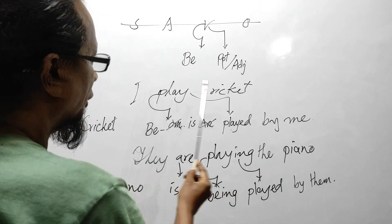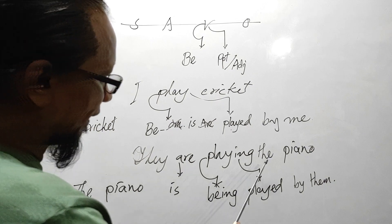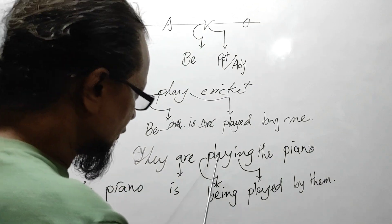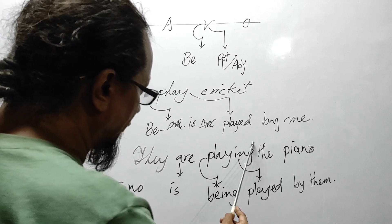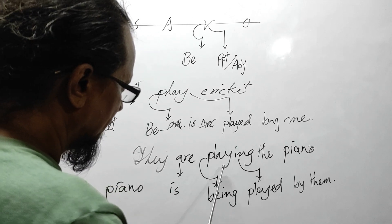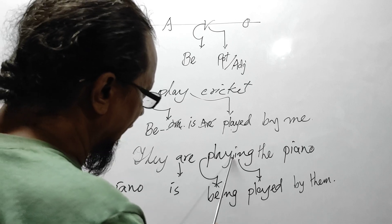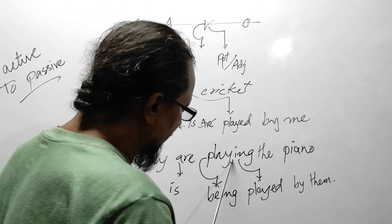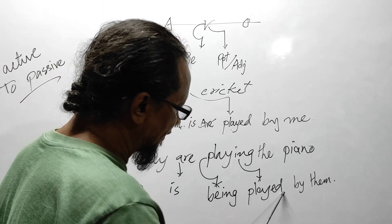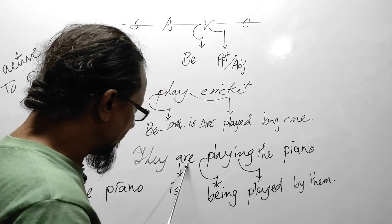For another example — continuous tense: 'They are playing the piano.' The principal part here is 'playing.' According to the rule, this principal part must be replaced by 'B,' which in the '-ing' form is 'being.' And this one is turned into past participle. So it becomes 'being played.'